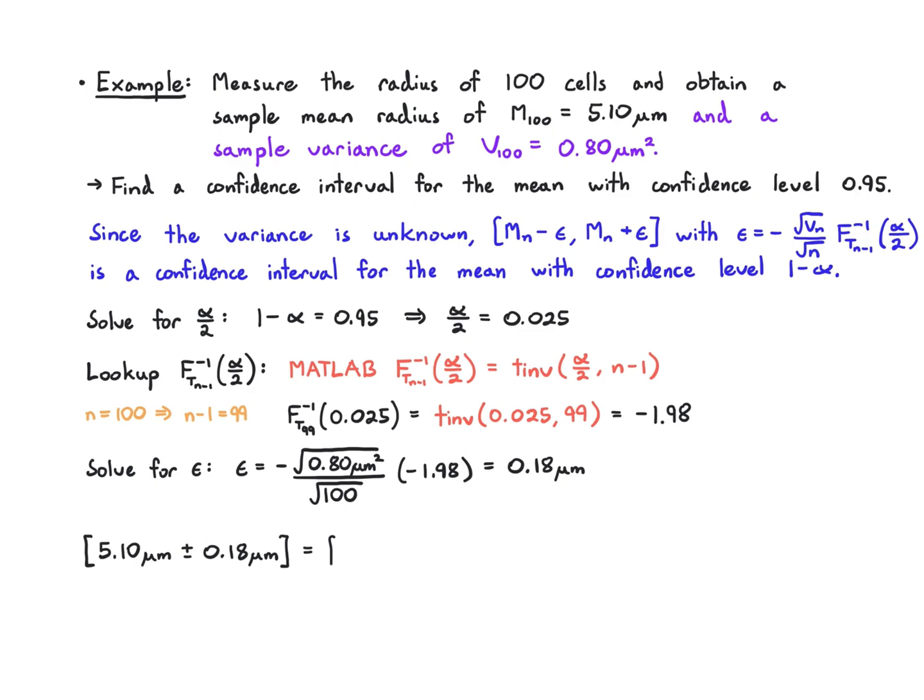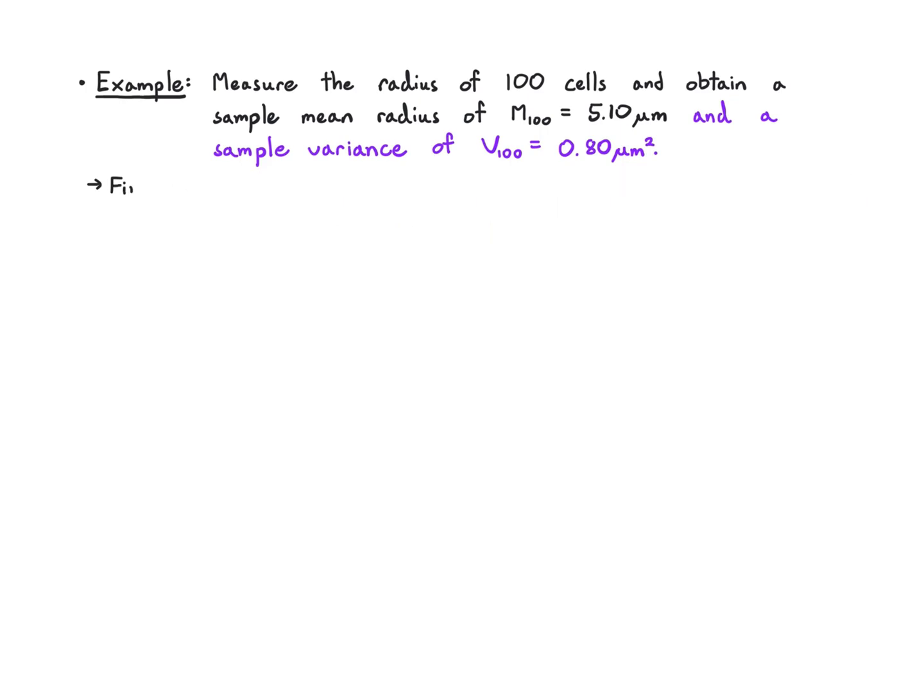So what we're getting is 5.1 plus or minus 0.18 microns, which I could also write as this interval by adding and subtracting that value. That's a confidence interval for the mean with confidence level 0.95.